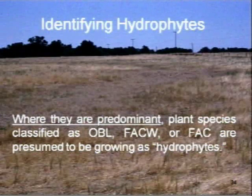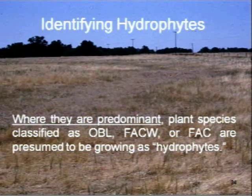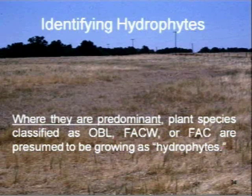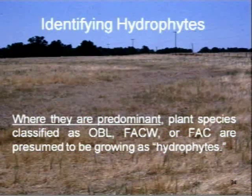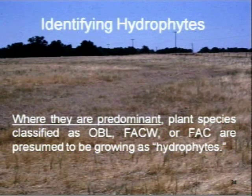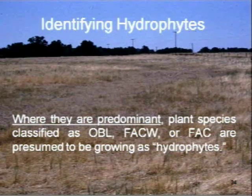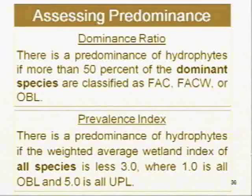The list of plant species that occur in wetlands provides the basis for developing field indicators for the vegetation parameter. If there is a predominance of wetland indicator species, the parameter is considered met. Two decisions must be made: first, which classes of indicator species to use, and second, how to judge predominance. The 1987 manual only considers obligate, facultative-wet, and facultative species when assessing the vegetation parameter. There are two general approaches to determining predominance: the dominance ratio and the prevalence index.